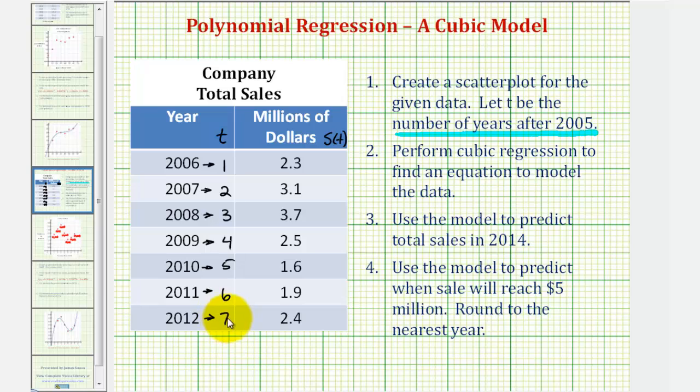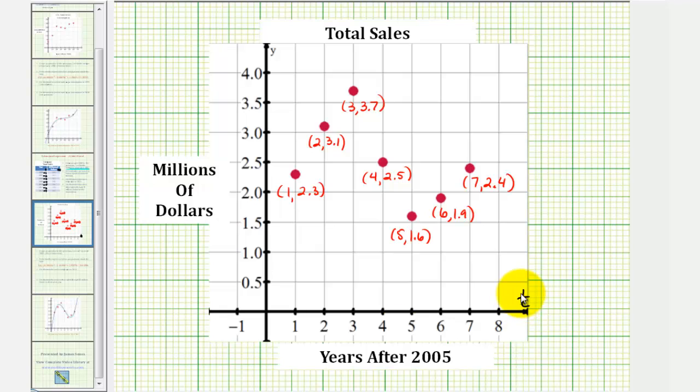So when we go to create the scatter plot, we need to make sure that our X axis, or in this case, the T axis, contains these values. We need to make sure the Y axis, or the S of T axis, contains these values. To save some time, I've already created the scatter plot, which we'll duplicate on the graphing calculator. So again, notice how the T axis does contain the values from one to seven, and the S of T axis, normally the Y axis, does contain 1.6 through 3.7.